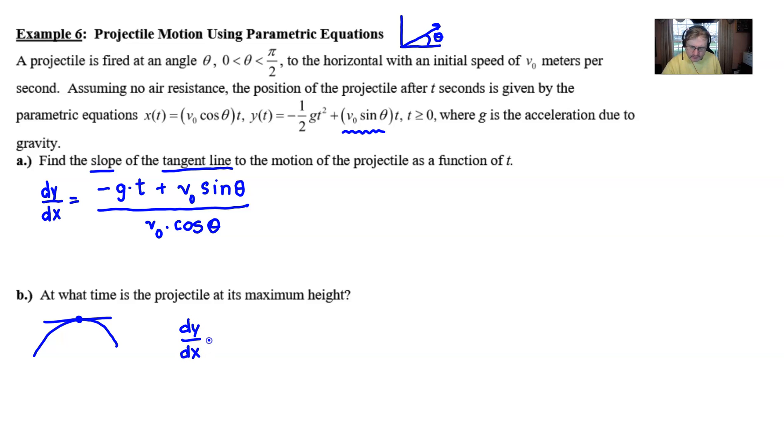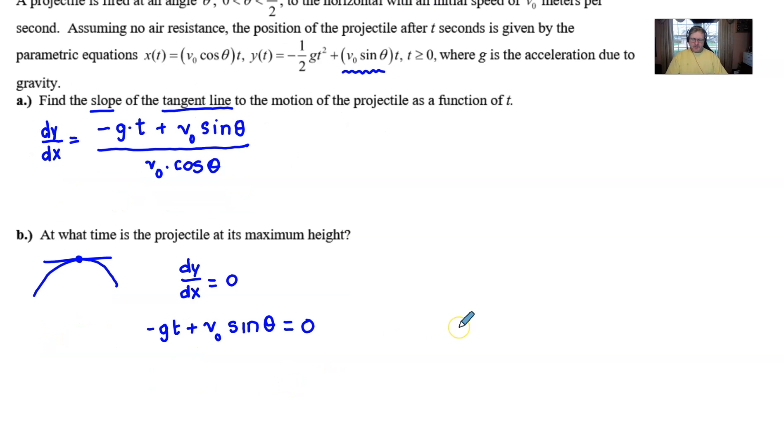So we're going to do the exact same thing. We're going to set our derivative equal to zero, and in this case that's going to occur whenever our numerator equals zero. Fractions can only be zero when the numerator is zero. And so when we make that happen, we're going to be able to solve this for t fairly easily by subtracting over our v sub not sine theta, and then we'll divide over our negative g.